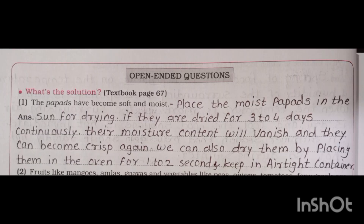Open-ended question: what is the solution? First one: the papads have become soft and moist. Answer: place the moist papads in the sun for drying. If they are dried for 3–4 days continuously, their moisture content will vanish and they can become crisp again. We can also dry them by placing them in the oven for 1–2 minutes and keep them in an airtight container.